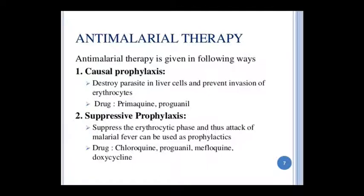Anti-malarial therapy — how can we give this? 1. Causal prophylaxis or suppressive prophylaxis: Causal prophylaxis prevents sporozoites from reaching the erythrocytic stage, such as Primaquine and Proguanil. 2. Suppressive prophylaxis suppresses the erythrocytic phase and malarial fever attack. Drugs used: Chloroquine, Proguanil, Mefloquine, and Doxycycline.